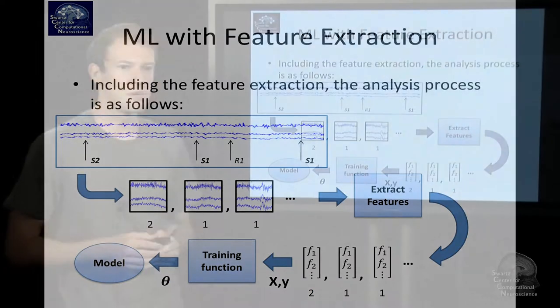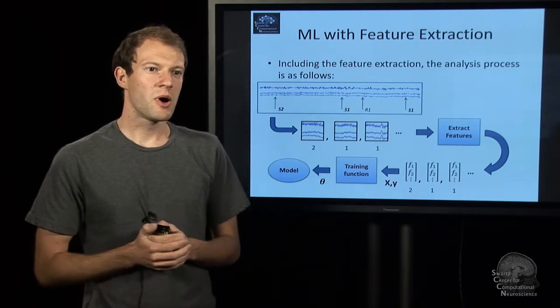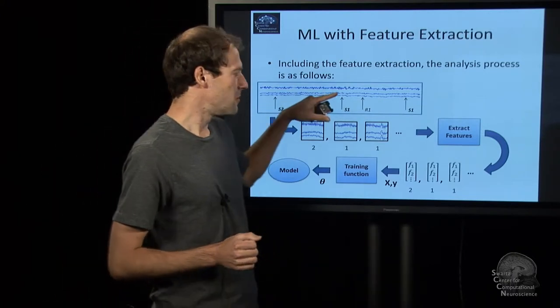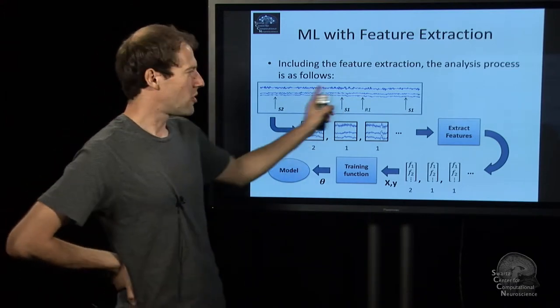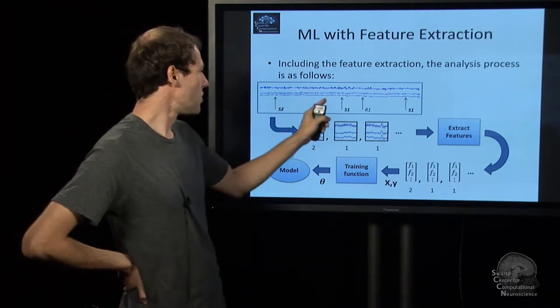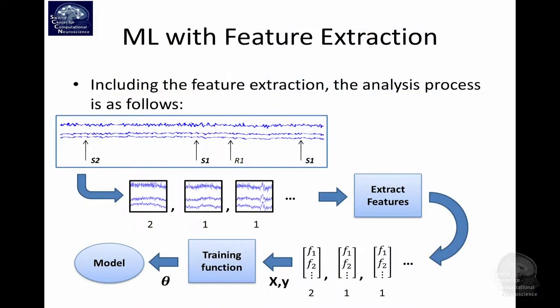Now the task is to design a statistical mapping from that to the output. Let me just summarize the processing flow. We have our EEG recording. We have multiple events happening that we happen to annotate. Around each of these we cut out this chunk of EEG. We remember the label, like 2, 1, 1. Then we're taking this collection of data, extract features.